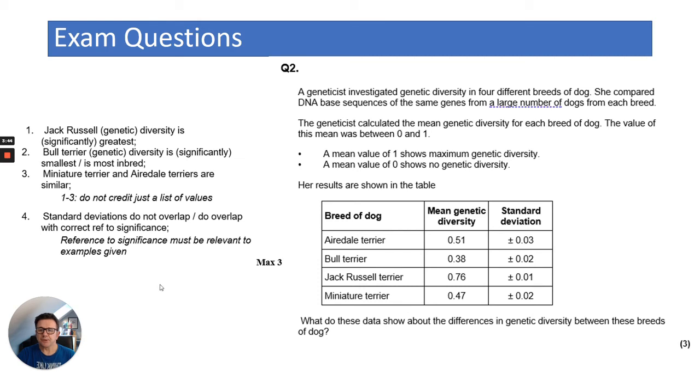So you could talk about the data as I've just done. And then it says for one, two and three, you could mention. But you've got to mention the standard deviations that are in there. And you can see that there's no overlap and therefore they are very different. So the data is different. There's a different mean genetic diversity.